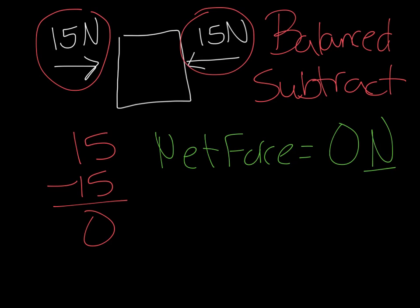We use N for newtons because that's the unit of measurement for force. Since they're balanced, do any of them win? No — no one wins. So because of that, this object does not move. No movement.